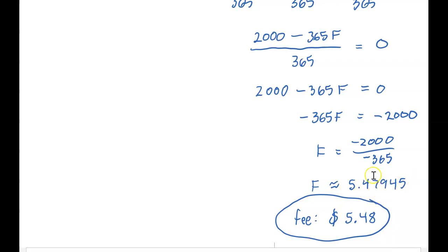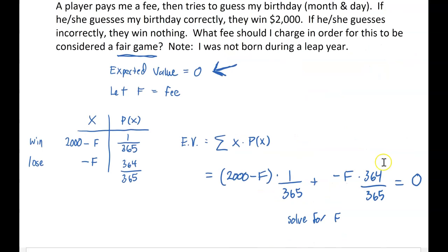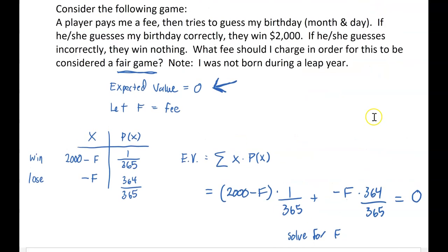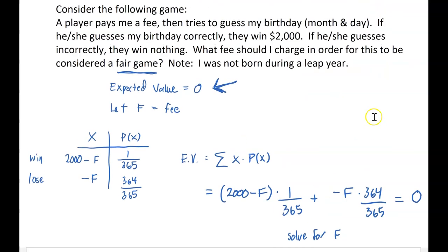It's not exactly going to be a fair game, but if we round to the nearest cent, because it'd be pretty hard for somebody to pay me exactly this amount in dollars and cents. But if I charge $5.48, that's about as close as I can get to this being a fair game, meaning it doesn't favor me, the house, and it doesn't favor the player. It's a fair game.